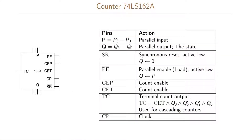We are going to look at a specific circuit called a counter. The counter we will examine is called 74LS162A. There are different types of counters, and this specific one is a 4-bit counter, so it has a 4-bit state — in theory, 16 different states. However, this counter is a modulo 10 counter, so it only counts from 0 to 9 and then starts back at 0 again. Only 10 states are used, even though 16 are possible.